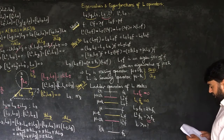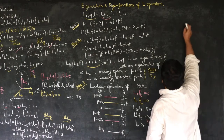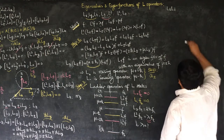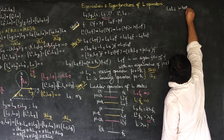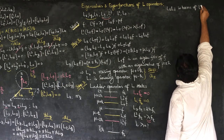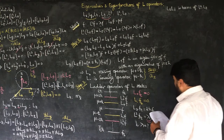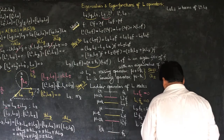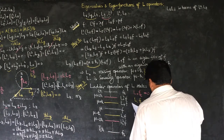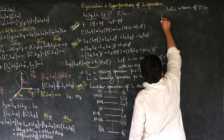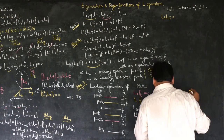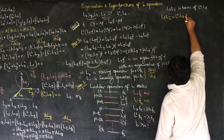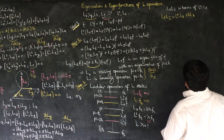In order to get the value of lambda, we are trying to write L+L- and L-L+ multiplication in terms of L² and Lz. We will have to prove that L+∓L-± is equal to L² minus Lz² plus-minus ℏLz.